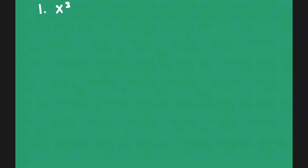I'm planning to do a Day 4 review, and this is number 1, where it says that you have to factor the following polynomial. The common factor is x, and you have x squared plus 5. So that's how you would write number 1 in factored form: x times (x² + 5).